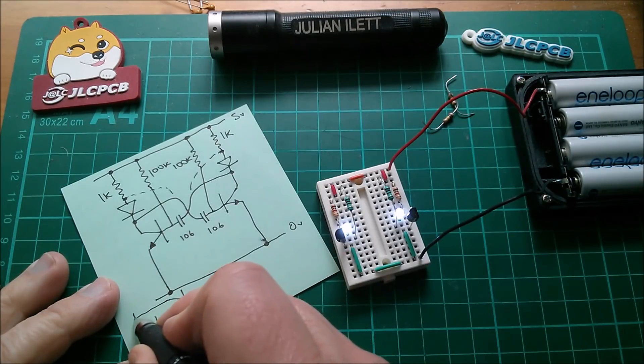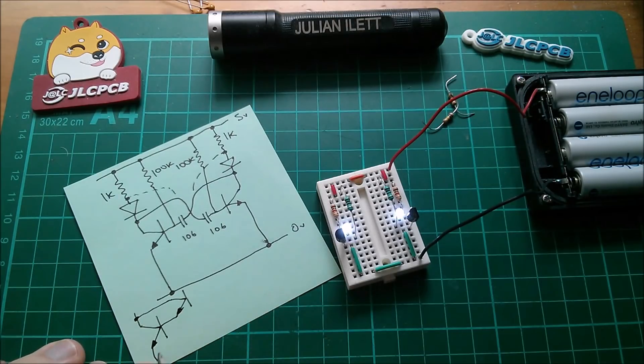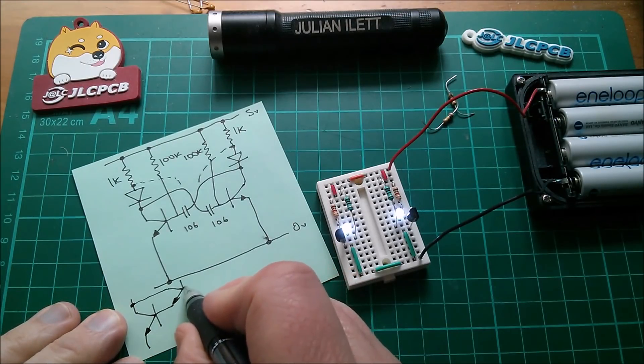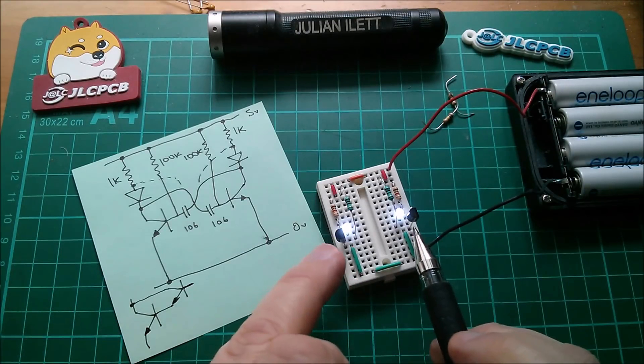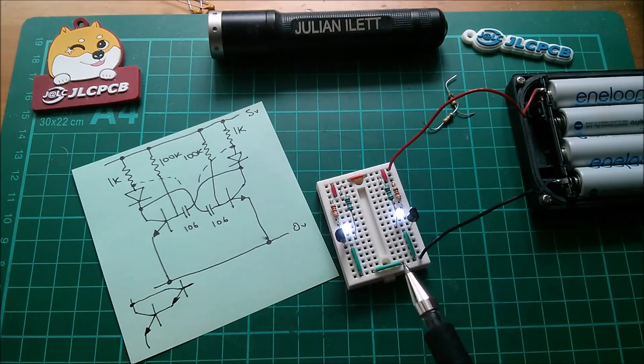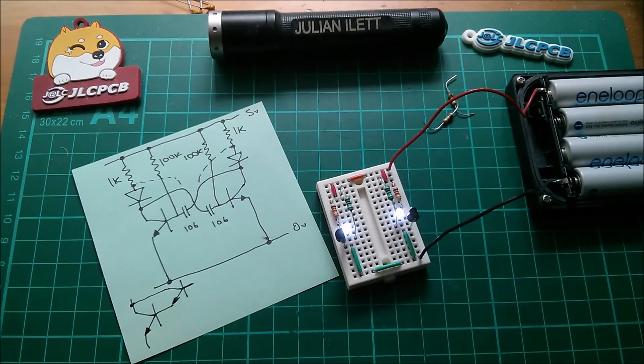The base is the base of this upper transistor. So let's add another couple of transistors in here to create a Darlington astable multivibrator flashing LED circuit.